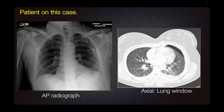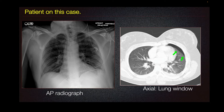The patient did undergo CT of the chest. Here is the axial lung window, demonstrating the small pneumothorax in the left lung apex, correlating to the finding seen in the prior radiograph.